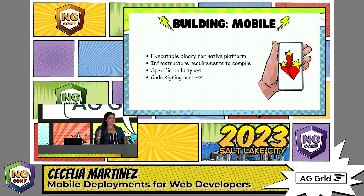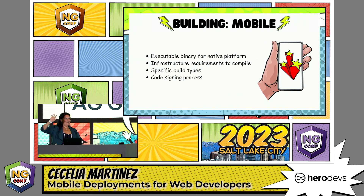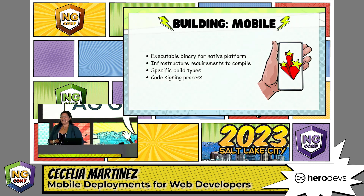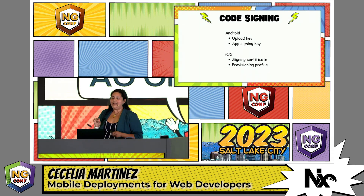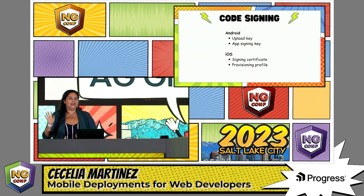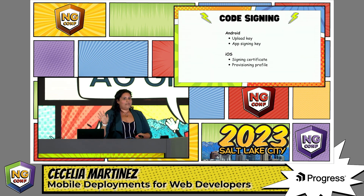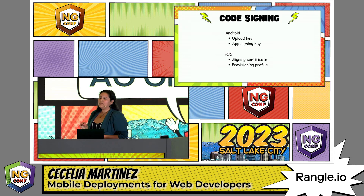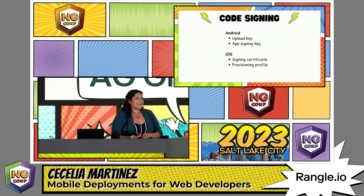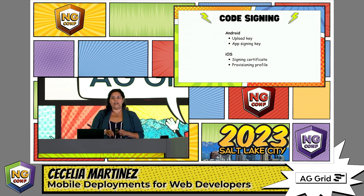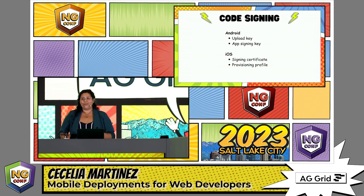The biggest obstacle in the build process is definitely code signing. Code signing is essentially an authentication process where you use secure credentials to say: this native binary was created by me, I am authorized to do that, these are the devices it can run on, and it has not been altered or modified since it was created. These are requirements put in place by Android and iOS — you cannot get around this process. For Android, it's required for any release build. For iOS, it's required for any build that runs on a real device. The credentials used for code signing are secure — they need to be generated securely, stored securely, cannot be compromised, cannot be checked into Git, and must be in the environment used to build.